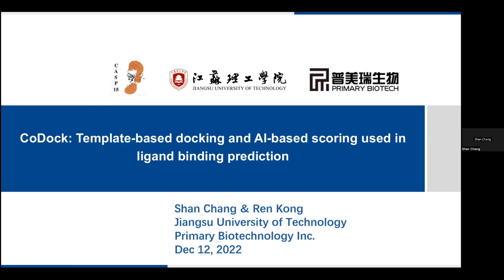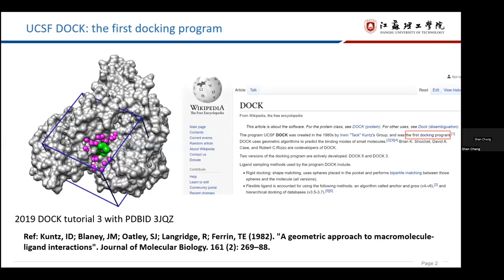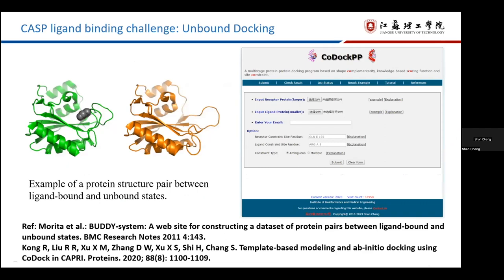It's my honor to be invited by CASP organizers to report our team's work for ligand-binding prediction. We know that the first docking program is UCSF dock. Traditional molecular docking usually uses the bound receptor structure for docking. But the CASP ligand-binding challenge is different. The receptor structures are predicted from sequence, usually not in a bound state. So it can be regarded as unbound docking, which increases the difficulty of ligand-binding prediction.